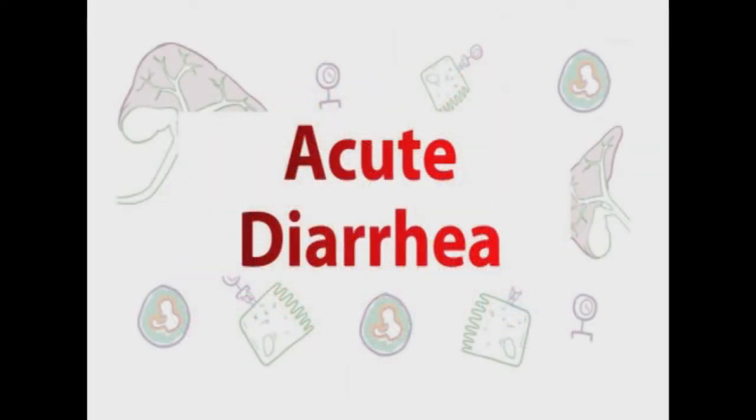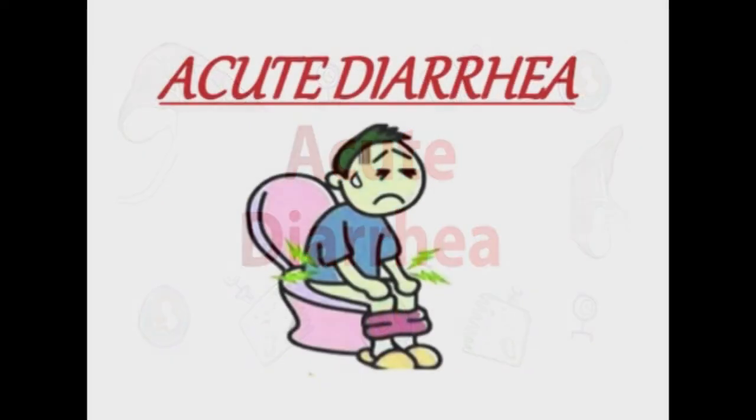Acute diarrhea is the chief cause of morbidity and mortality in young children all over the world, more so in the developing countries. According to UNICEF, diarrhea causes 9% of all deaths worldwide among children under the age of 5. This is usually due to the resulting dehydration, and death usually occurs in less economically developed countries where droughts are more common and clean water is limited.